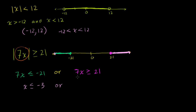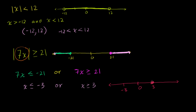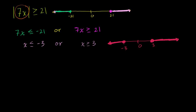Divide both sides by 7, you get x is less than or equal to negative 3. Or divide both sides of the other inequality by 7, you get x is greater than or equal to 3. So the number line I drew was not the solution set — that showed what 7x had to be. The actual solution set is: x has to be greater than or equal to 3, or less than or equal to negative 3. On the number line, with 0, 3, and negative 3 marked, x is either greater than or equal to 3, or less than or equal to negative 3.